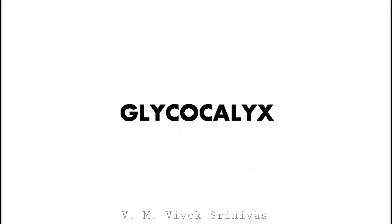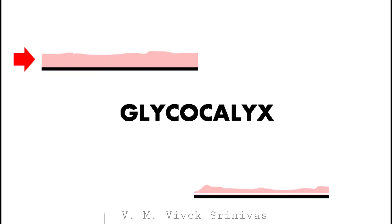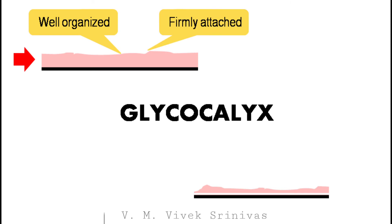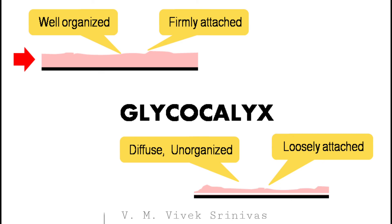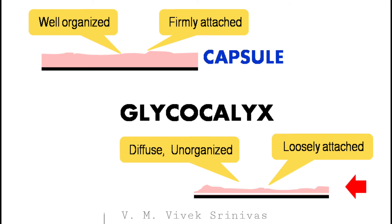The bacterial glycocalyx material can be present in two ways. It can be well-organized and firmly attached to the bacterial cell wall. Or it can be diffuse, unorganized, and loosely attached to the bacterial cell wall. When they are well-organized and firmly attached, it is referred to as the capsule. When they are diffuse, unorganized, and loosely attached, it is referred to as the slime layer.